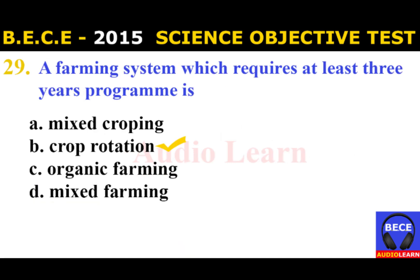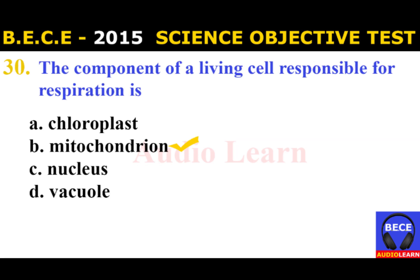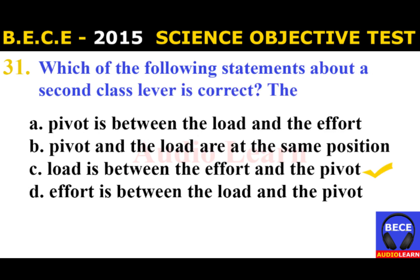Number 29: A farming system which requires at least a three-year program is A. Mixed cropping, B. Crop rotation, C. Organic farming, D. Mixed farming. The answer is B. Crop rotation. The farming system which requires at least a three-year program is crop rotation.